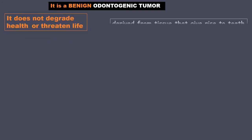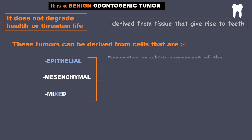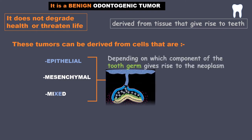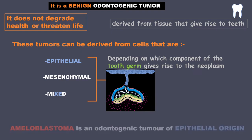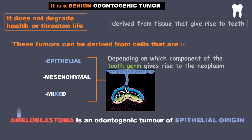Odontogenic means derived from tissue that give rise to teeth. These tumors can be derived from cells that are either epithelial, mesenchymal, or mixed depending on which component of the tooth germ gives rise to the neoplasm. Ameloblastoma is an odontogenic tumor of epithelial origin.